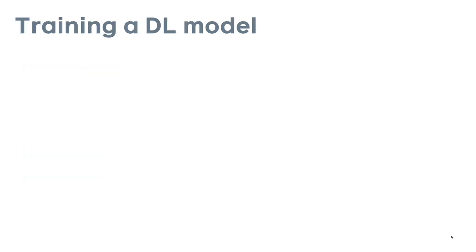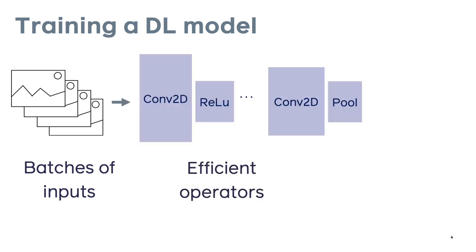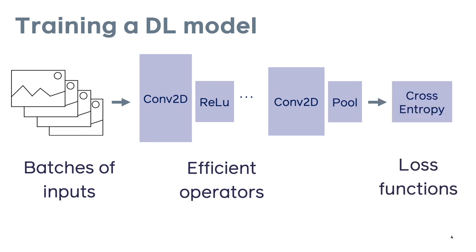To motivate the need for a deep learning and 3D library, let's think about what's needed to train a deep learning model — for example, in 2D for image classification. The end-to-end pipeline requires batched inputs like a batch of images, efficient operations, loss functions, and gradients everywhere to back-propagate through the whole pipeline. Optimized implementations of these components for 2D are already available.